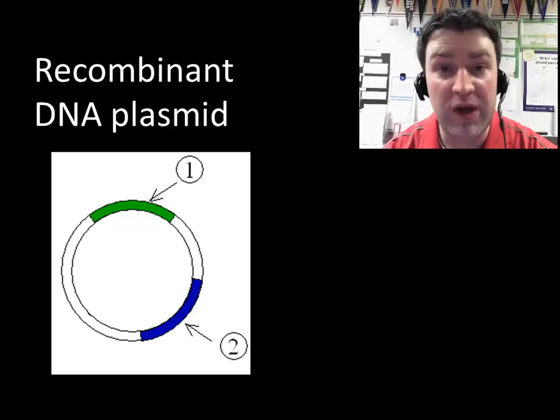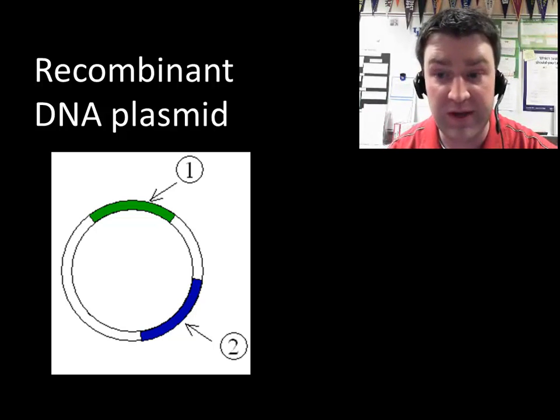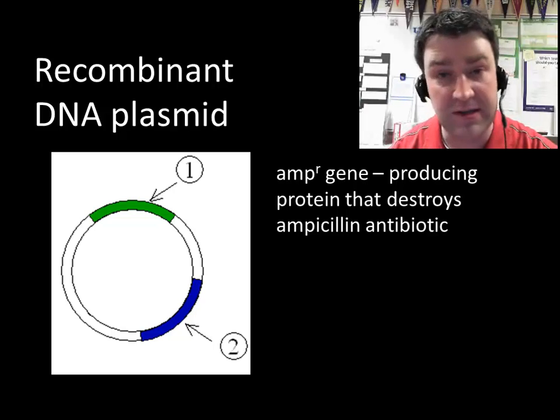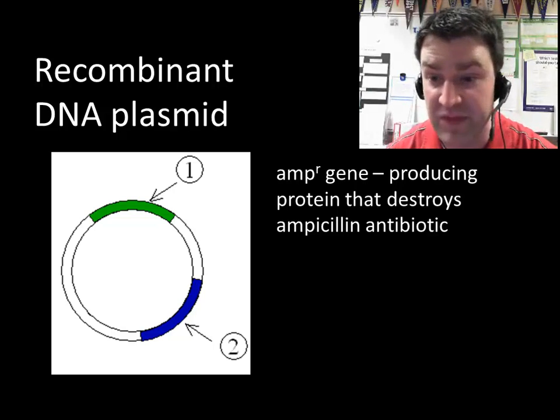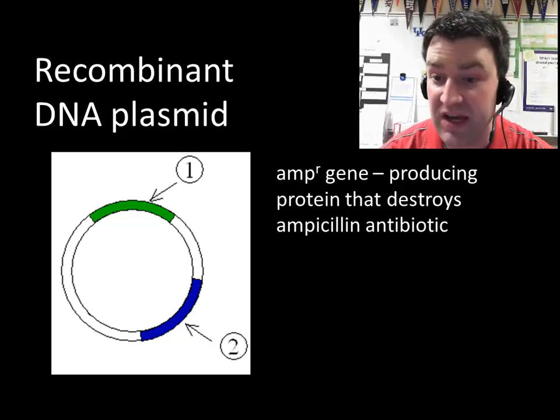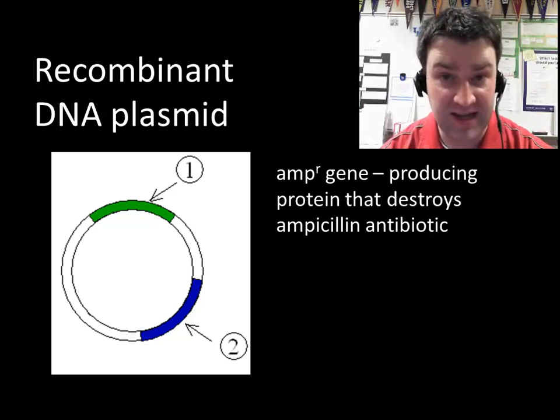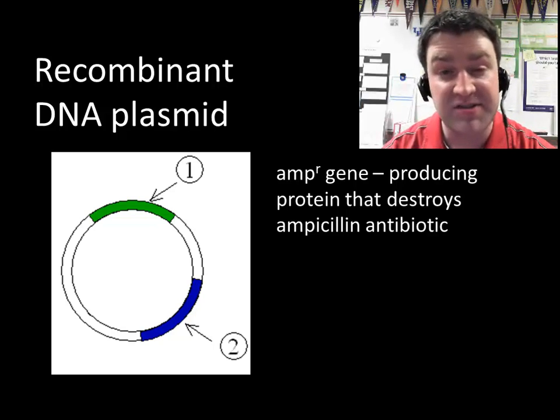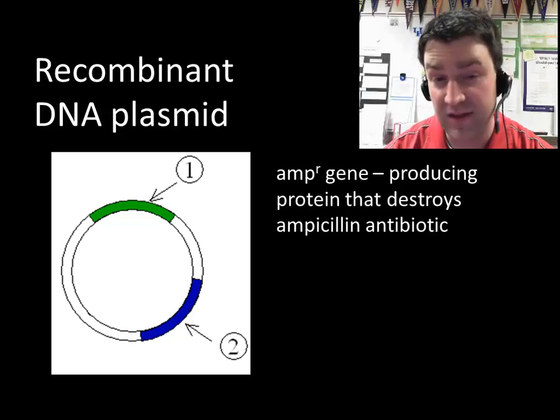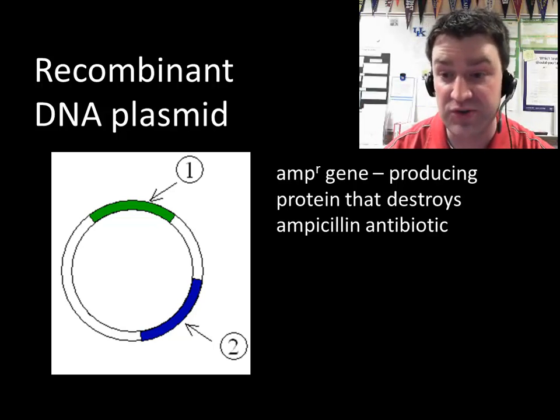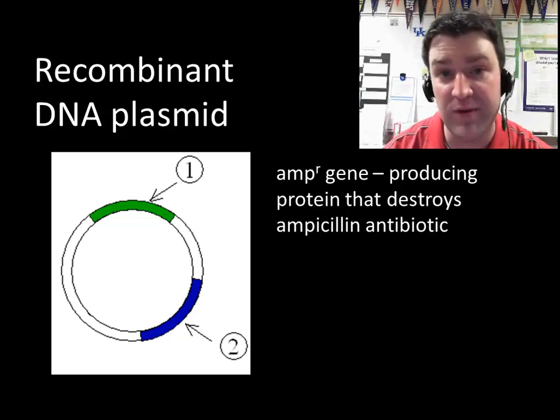So we ordered this plasmid from the company. In this particular lab we use the p-green plasmid and it has two genes in it. The gene for ampicillin antibiotic resistance so this will enable the bacteria that do transform to survive in an environment with ampicillin.